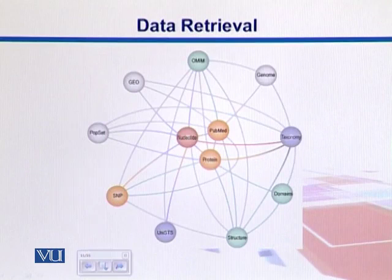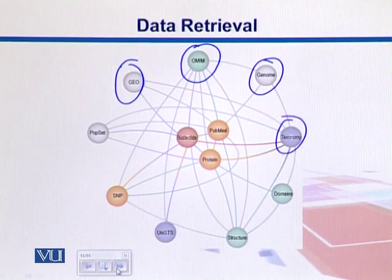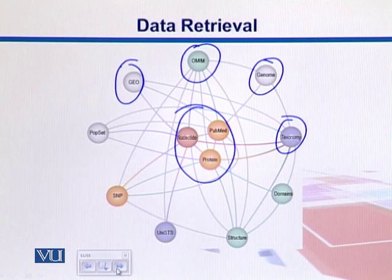It integrates GEO, which are the gene expression sets. It interacts with genome databases, some taxonomy databases, and in the middle we have the nucleotides, PubMed, and protein databases. That is an integrated system which operates between different databases. You simply search for whatever you are looking for and then Entrez will go and find it for you.